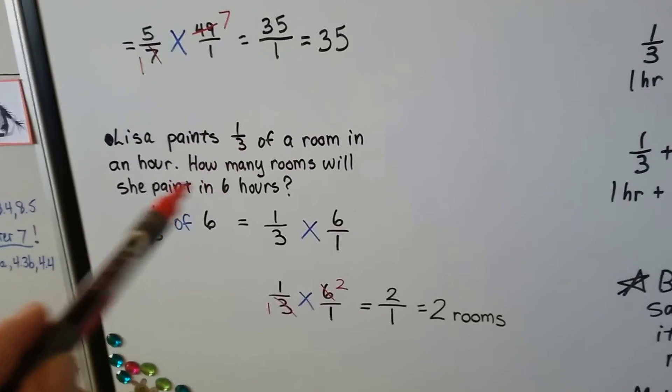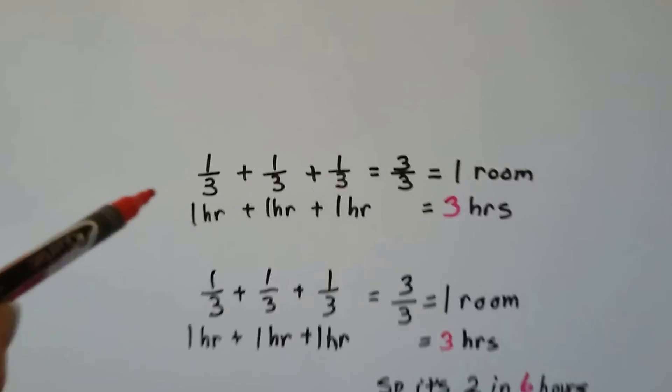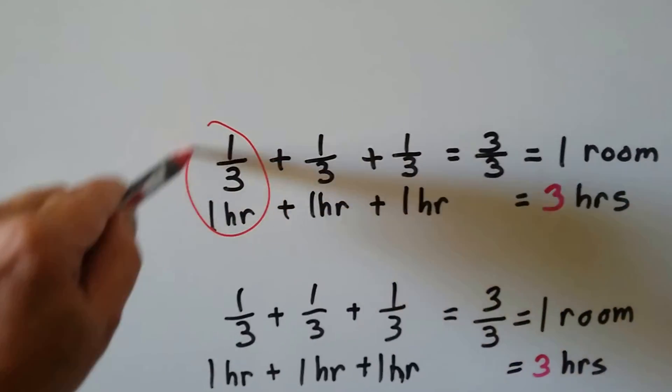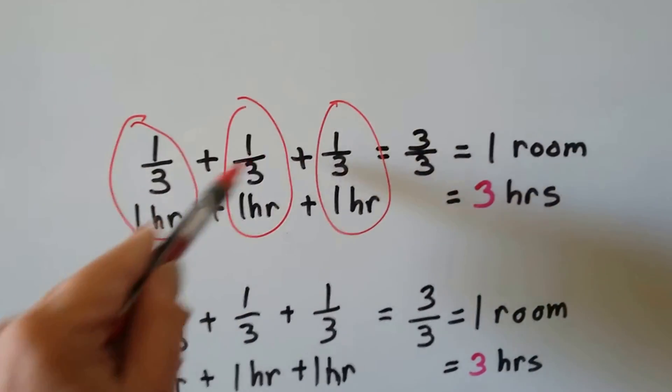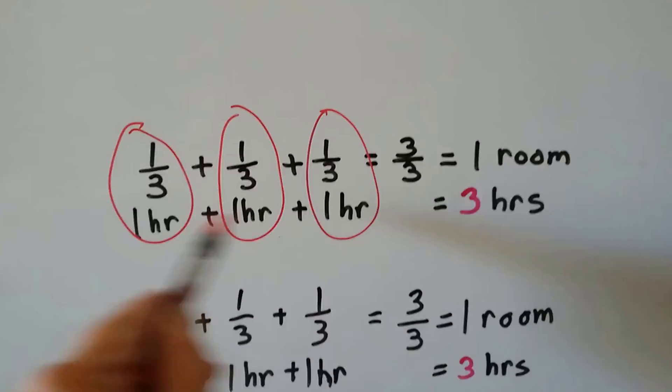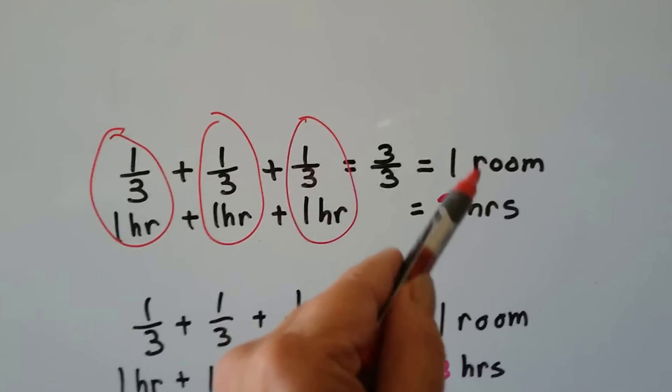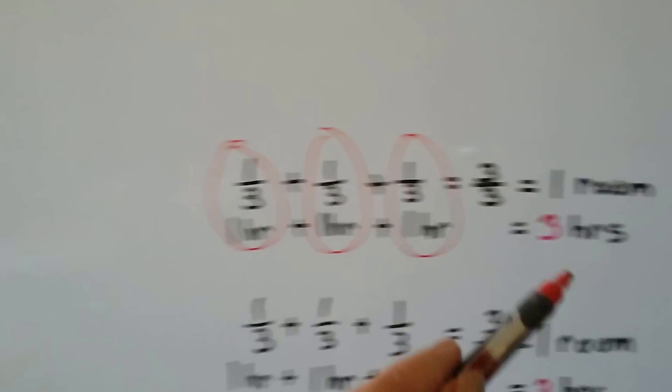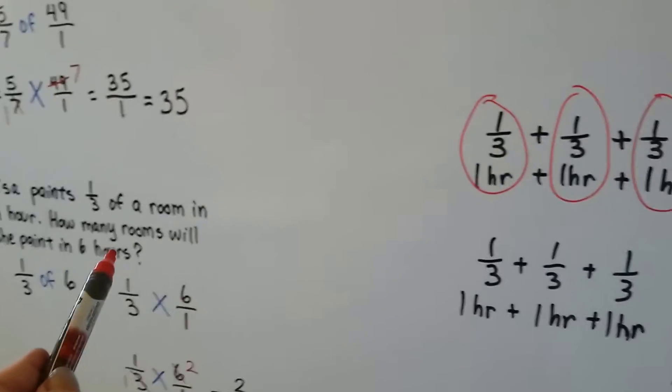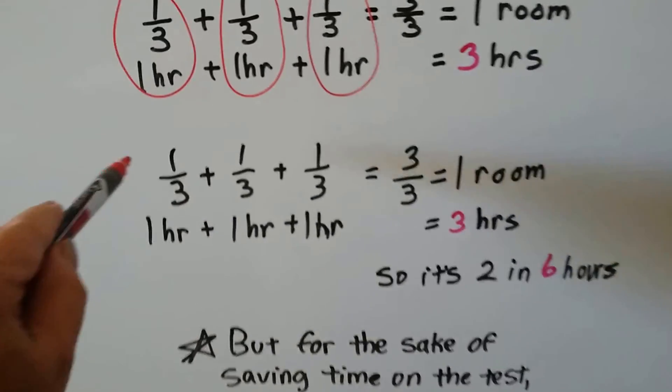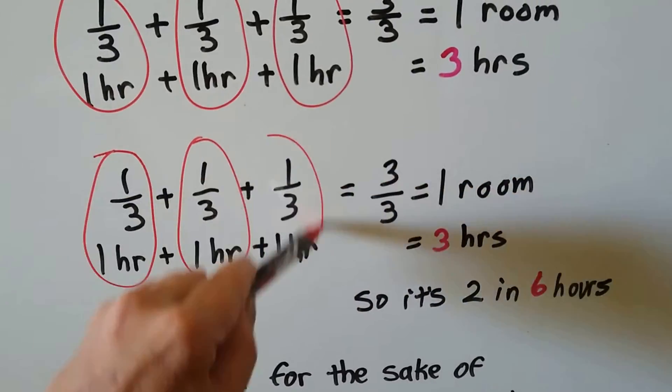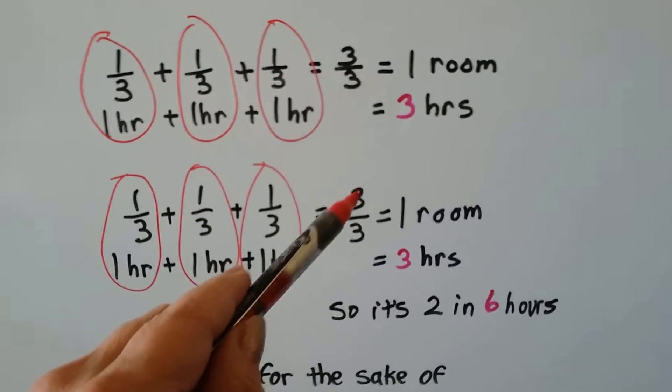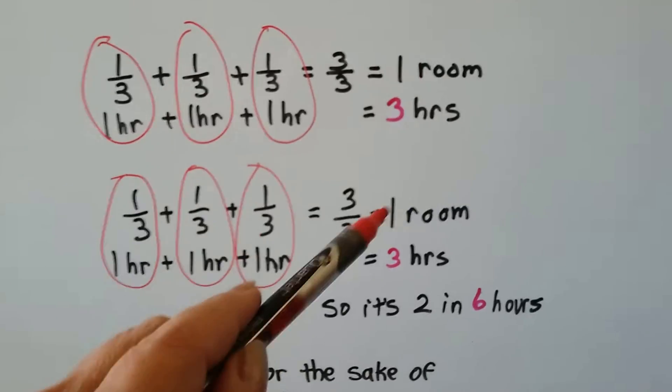So basically, this is what we did with this problem. She did 1/3 of a room in an hour. So that means that's one hour. There's another hour and there's another hour and we now have 3/3 and it's three hours. So she did one room in three hours. But it's asking us six hours. So if we do it again, then we'll have six hours and we'll have another 3/3. So that's one room, two rooms in six hours.